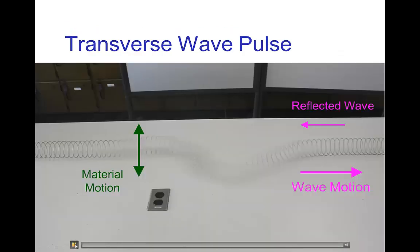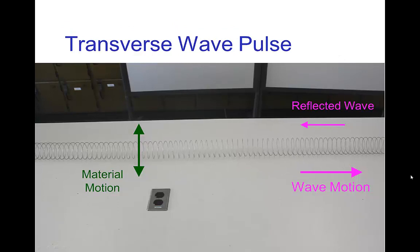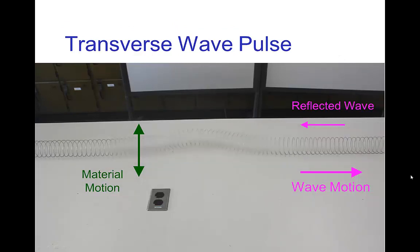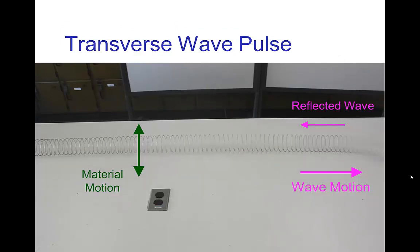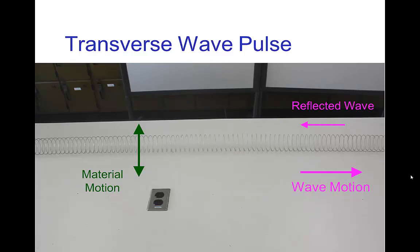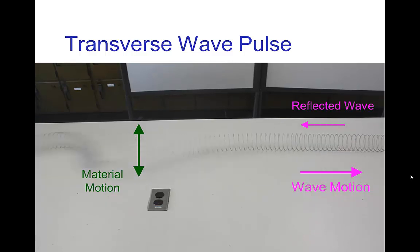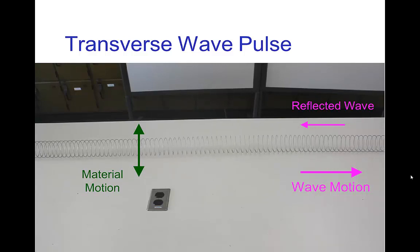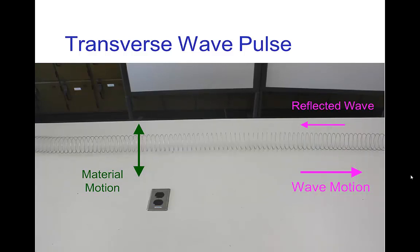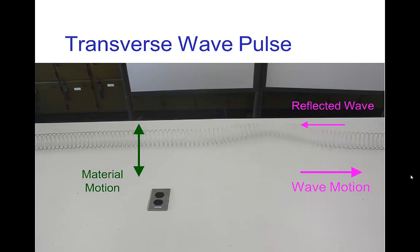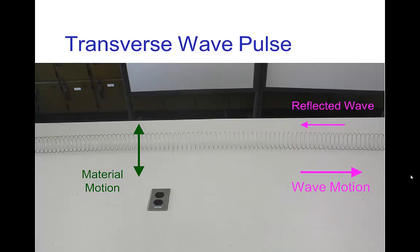Here's a quick video that shows transverse waves traveling on a slinky. You see that the motion of the material is in that video up and down and the wave is traveling first to the right and then reflects and travels to the left. The wave motion is perpendicular to the material motion.